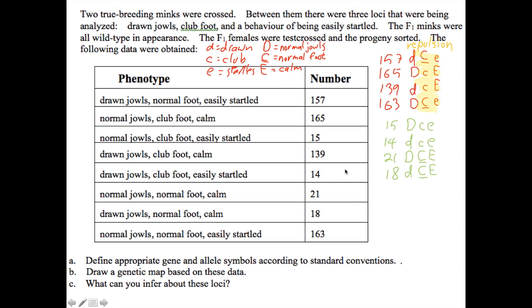Hopefully, you could see that all of these are in repulsion. It looks like the D gene is not really linked to either of these. We have an equal number of little d, big C, little e, to big D, big C, little e.